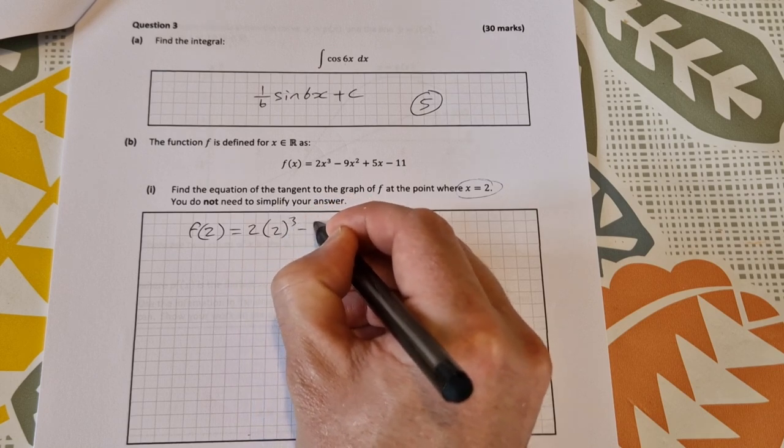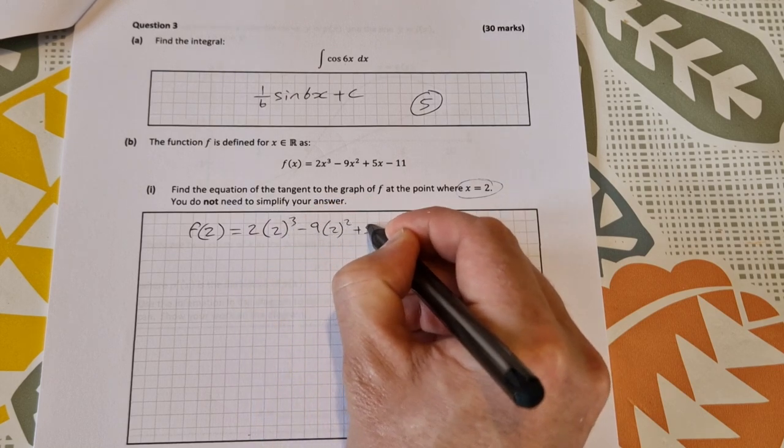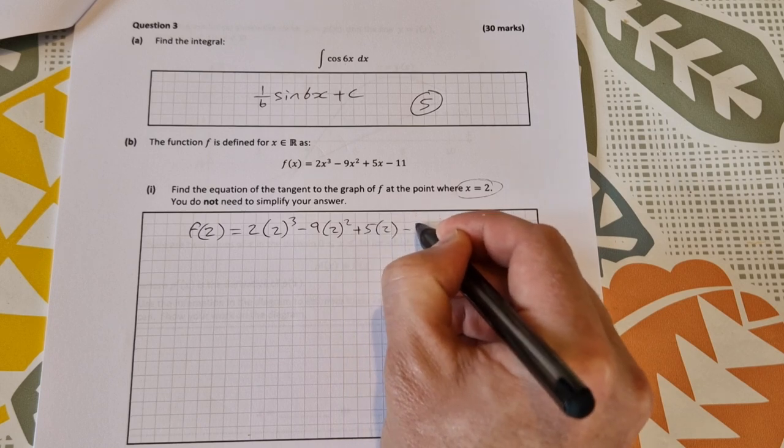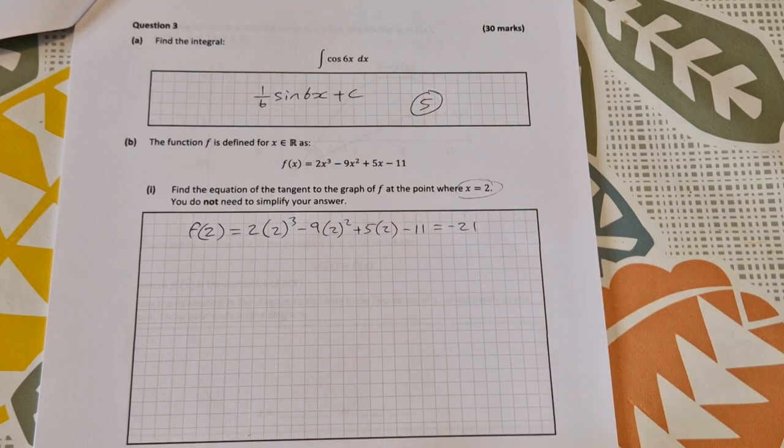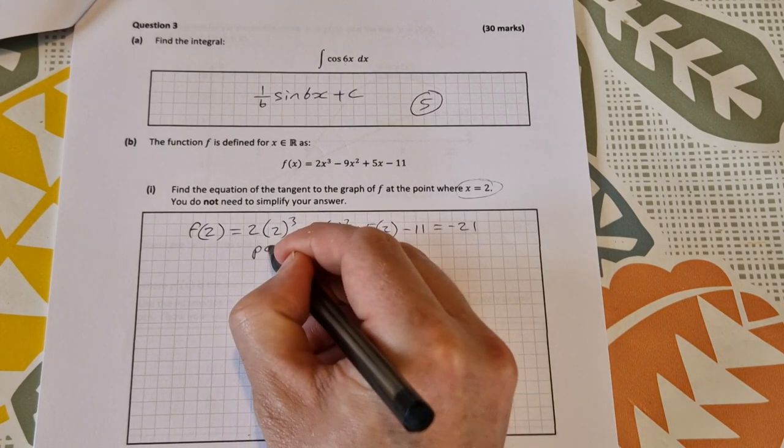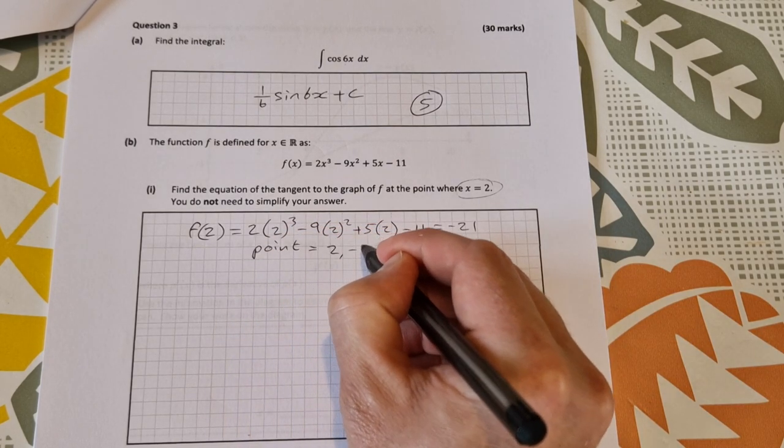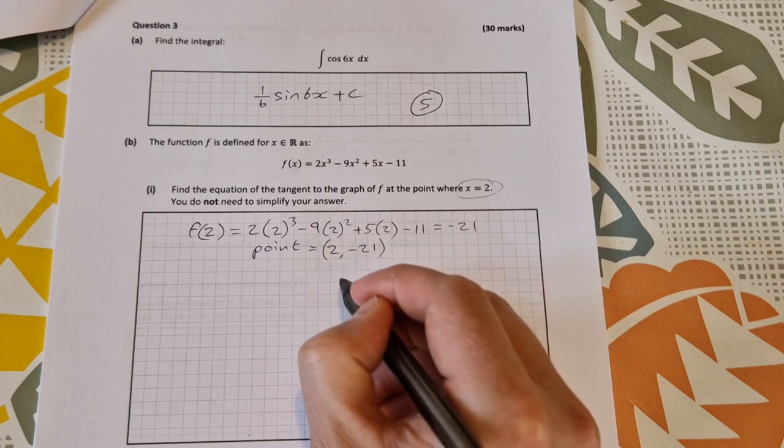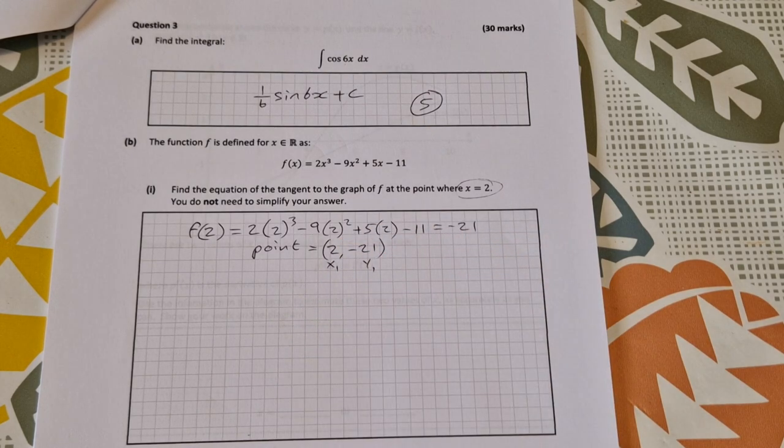So subbing 2 into our function, you get 2 times 2³ minus 9 times 2² plus 5 times 2 minus 11. That works out to be equal to minus 21. So that gives us our point (x,y) equals (2, -21), and I'll just label that straight away as (x₁, y₁) so there's no confusion.